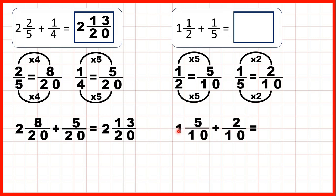So we have 1 whole, the denominator stays the same, and 5 plus 2 is 7. So that's 1 and 7 tenths as our answer.